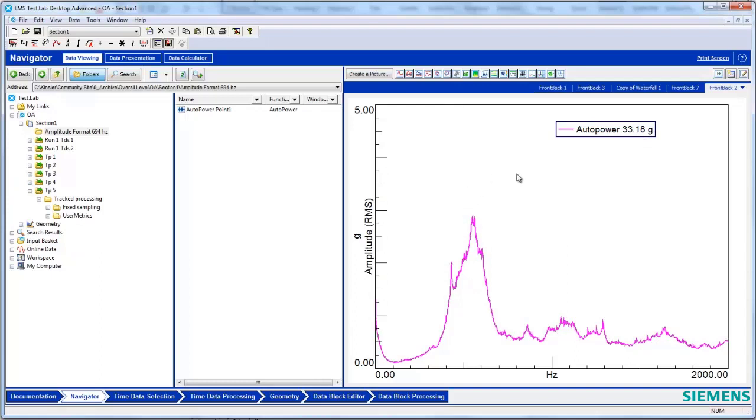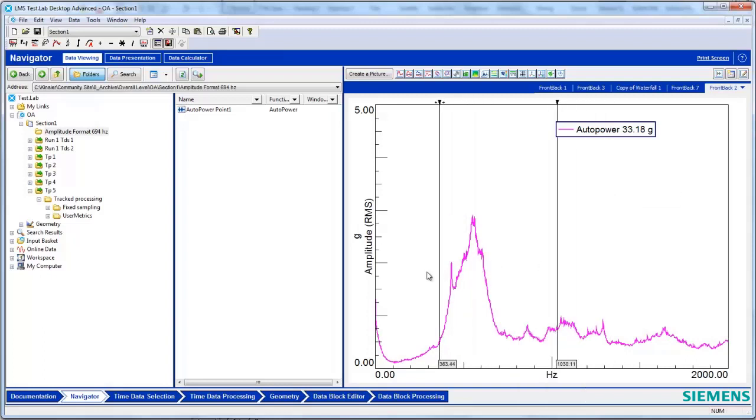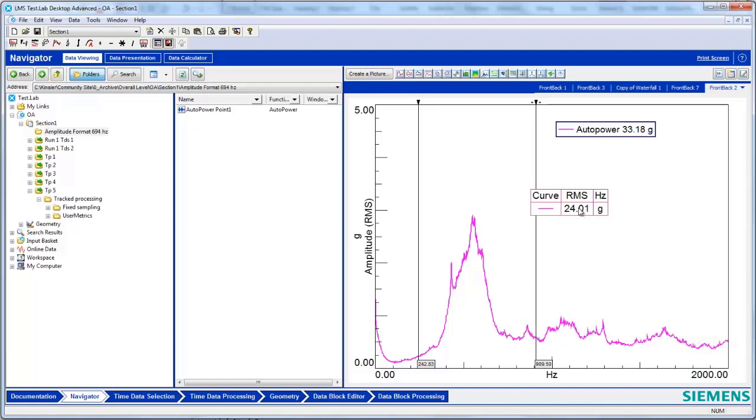Now if you want to calculate the RMS over a narrower frequency range, you can right-click and add a double cursor, slide your cursor over your frequency range of interest, right-click on the cursor, and go to Calculations, and then RMS. And that'll give you the RMS just within that frequency range.